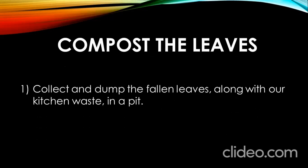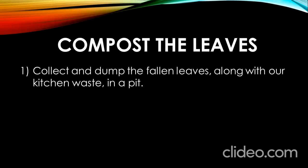Now what is composting of leaves? You have to collect and dump the fallen leaves along with the kitchen waste in a pit. The kitchen waste includes vegetable peels, fruit peels, and tea leaves — these are all the waste from your kitchen.